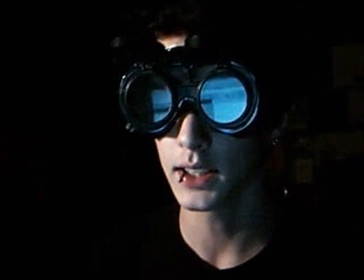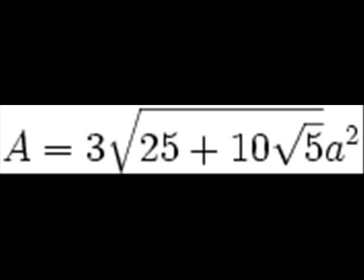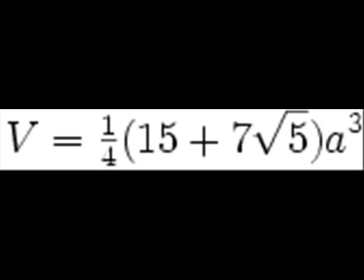The calculations for a dodecahedron for its area and volume are as follows. 3 times the root of 25 plus 10 times the root of 5, times a squared, is the area. And the volume is a quarter times 15 plus 7 times root of 5, times a cubed.